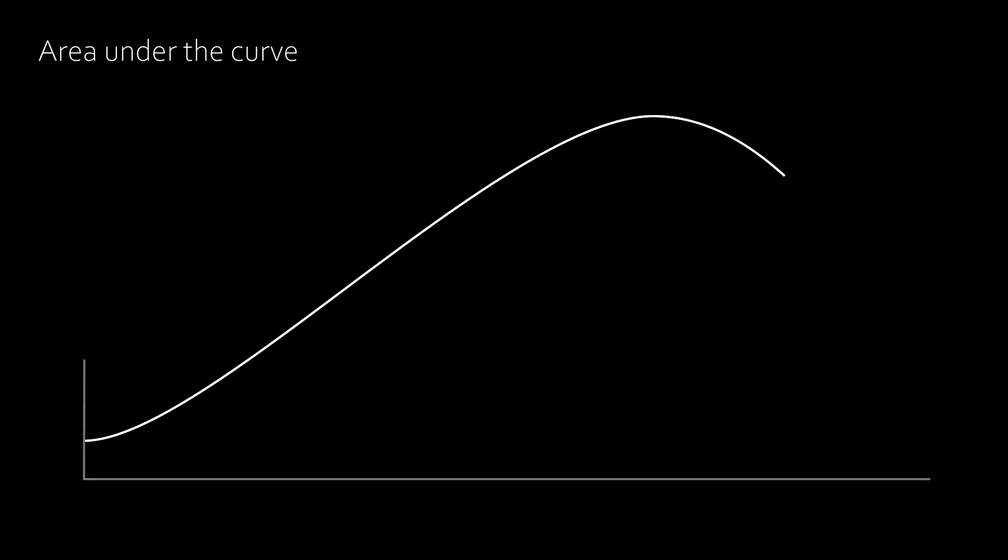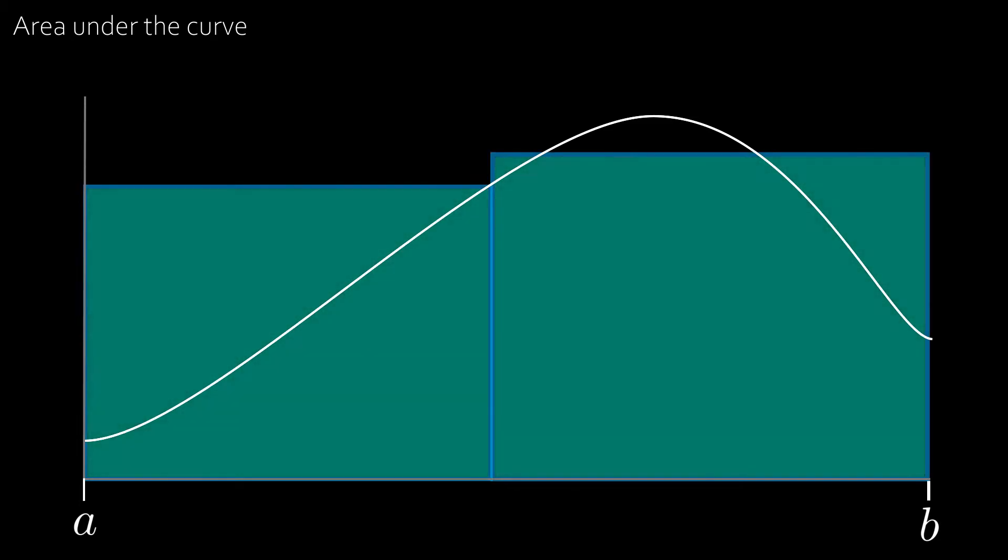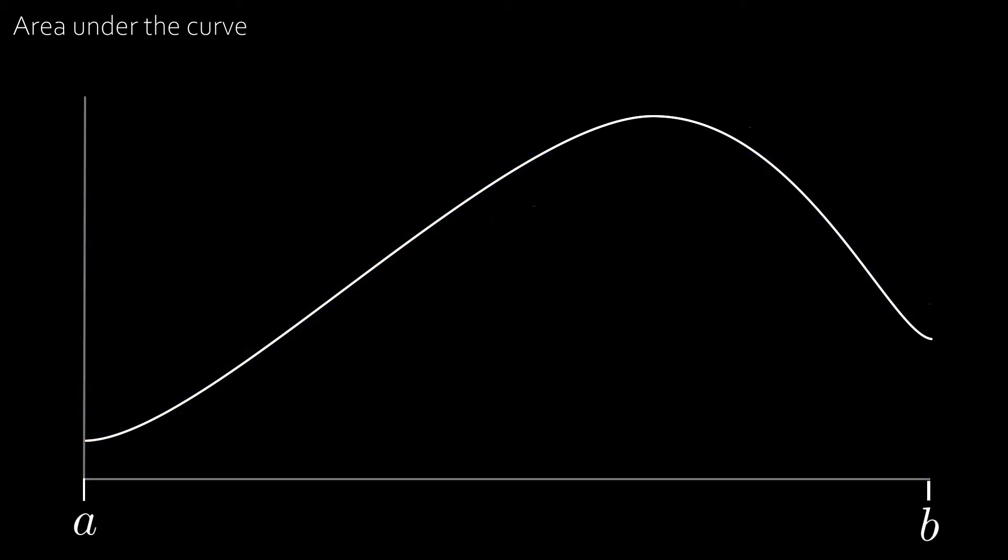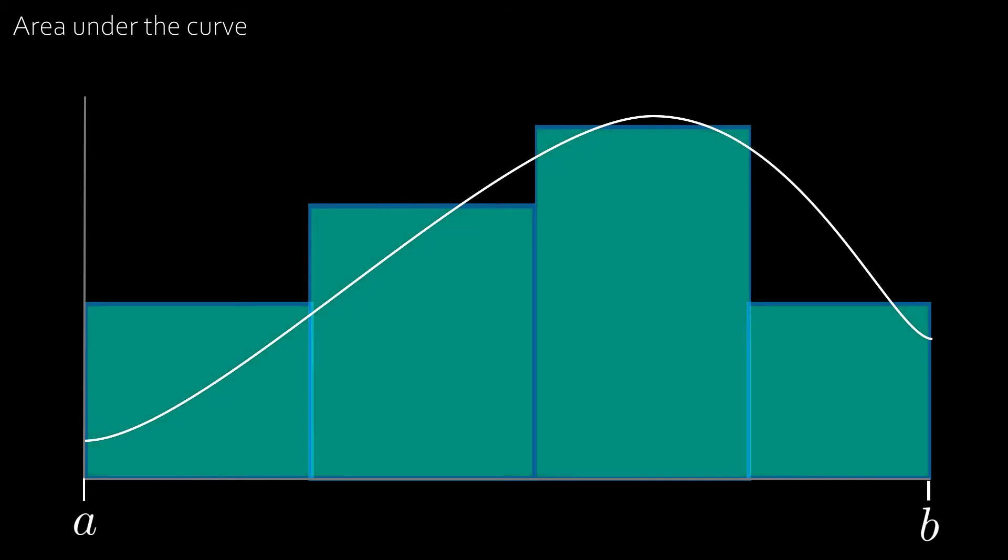Now suppose you have a graph and you want to find the area under the curve between a and b. You could begin by approximating the area with two rectangles of equal length. And you would get a decent enough approximation. The left rectangle overflows quite a bit and the right rectangle overflows a little bit and misses a little bit. Let's now try four rectangles instead. And we see that we get a much better approximation with much less overflowing.